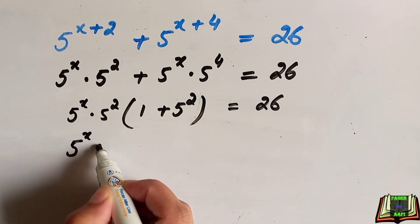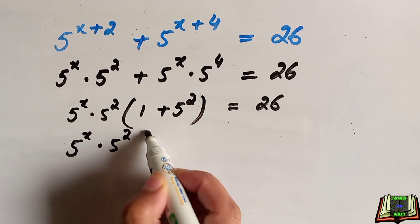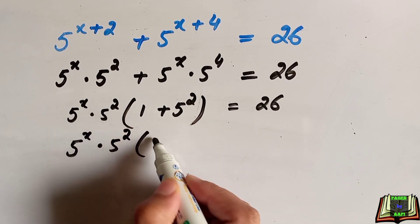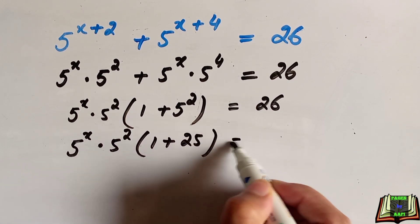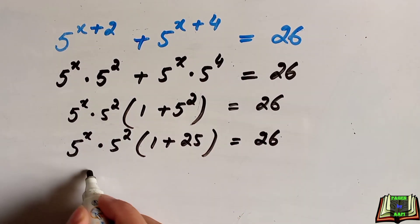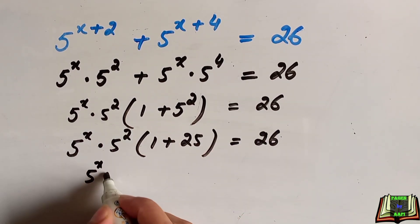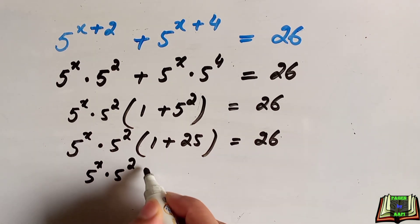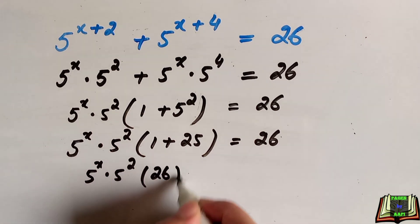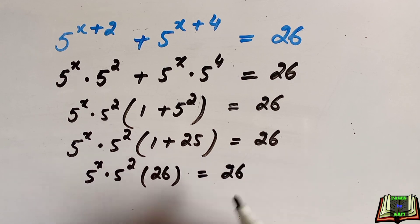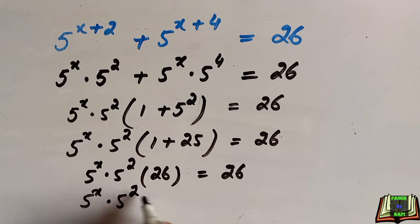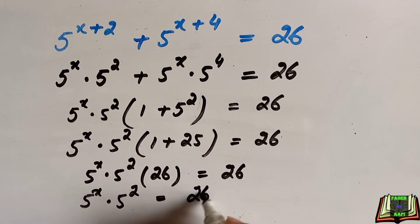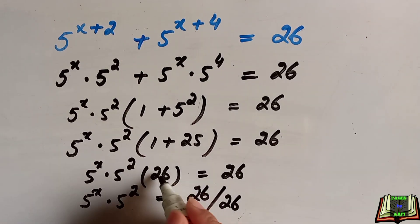Inside the bracket we have 1 plus 5 to the power 2, which is 1 plus 25, equal to 26. So 5 to the power x into 5 to the power 2, multiplied by 26, equals 26. Dividing both sides by 26 gives 5 to the power x into 5 to the power 2 equals 1.